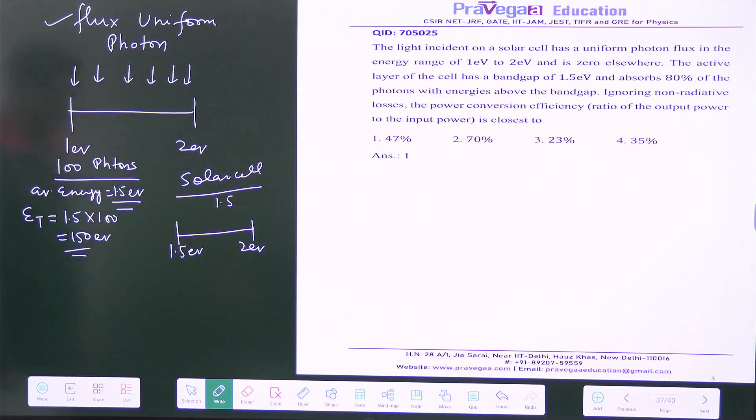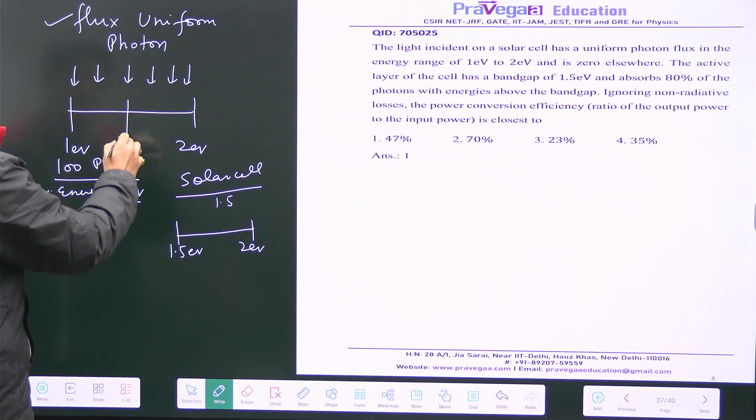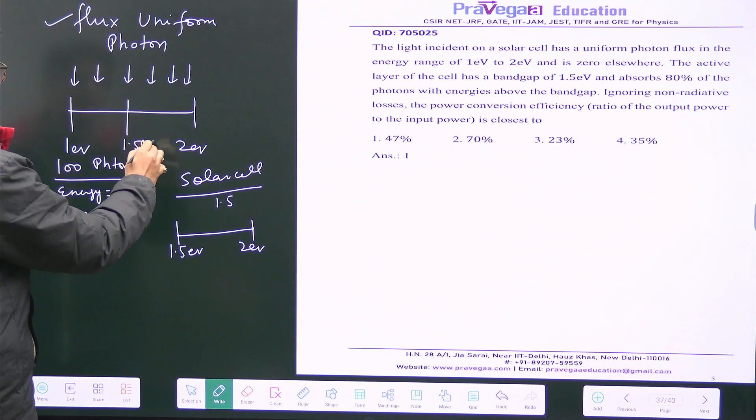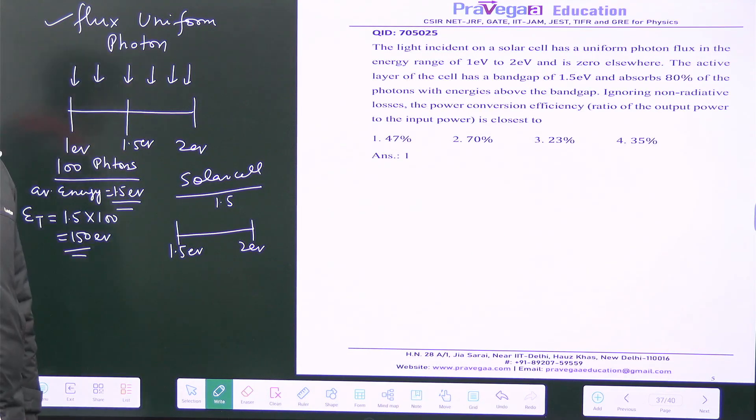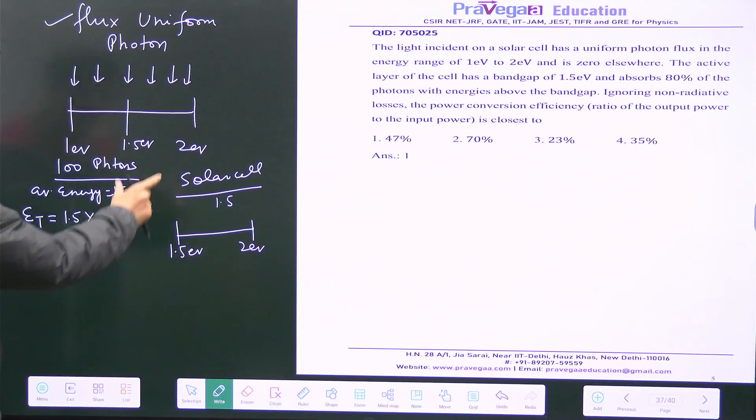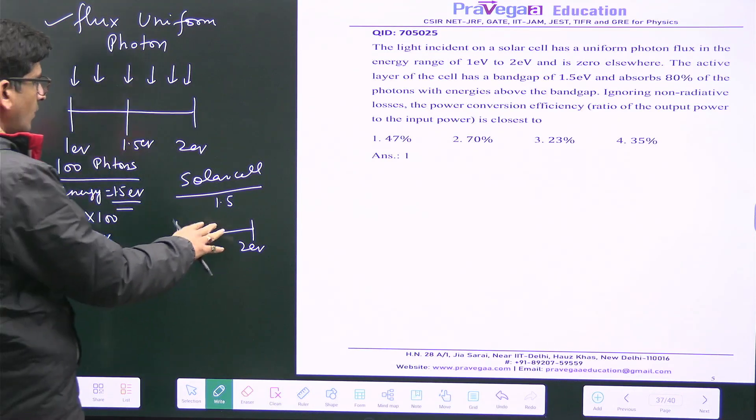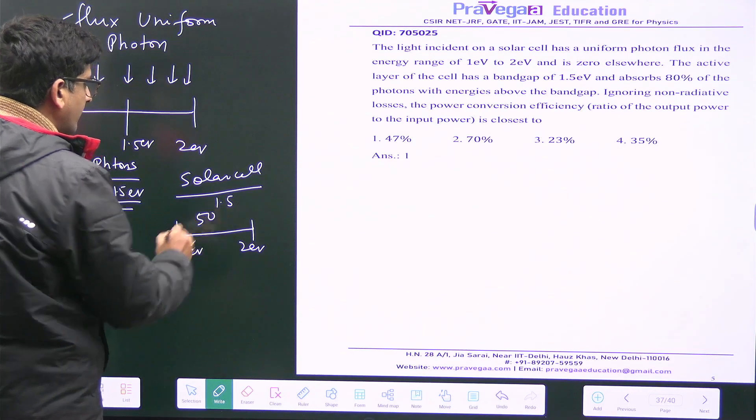How much will be absorbed? You can see that this is the range and the band gap is 1.5, so only 50 percent of the photons will be absorbed here. Out of hundred photons, only 50 photons will come here.